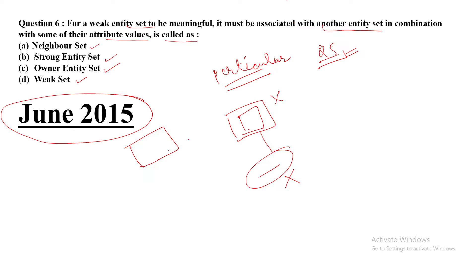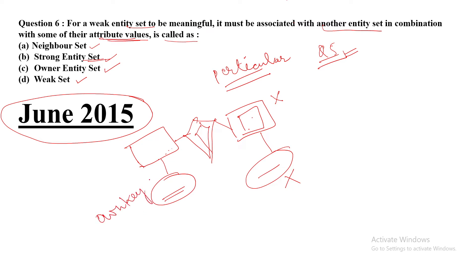A weak entity is always connected to a strong entity set, and they are connected by an identifying relationship. The combination with some of their attribute values refers to the strong entity. A strong entity has its own key attribute — that is what defines a strong entity set. A weak entity does not have its own key attribute, while a strong entity does.